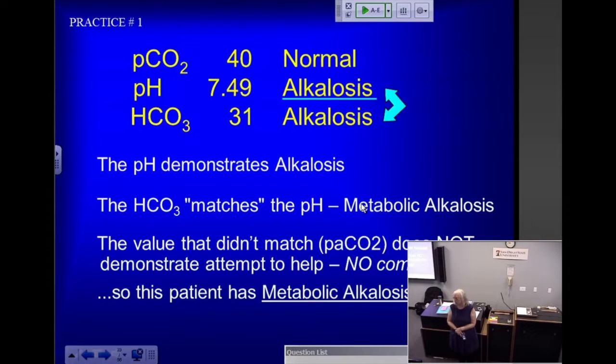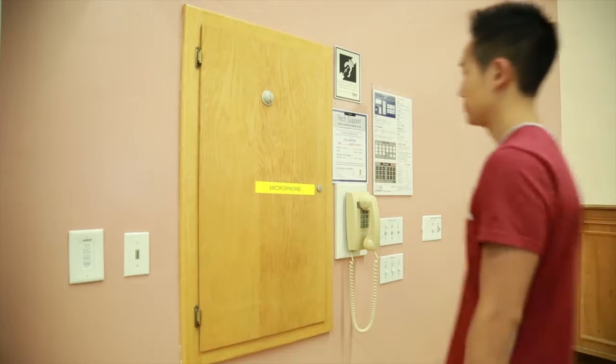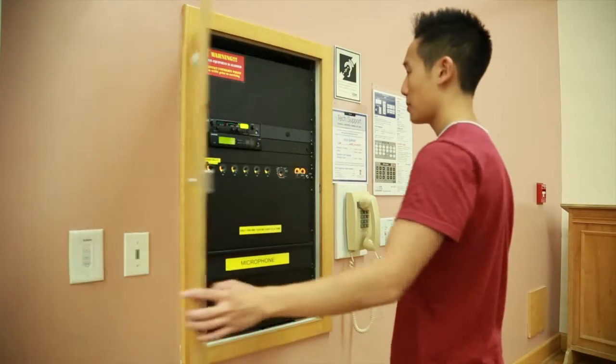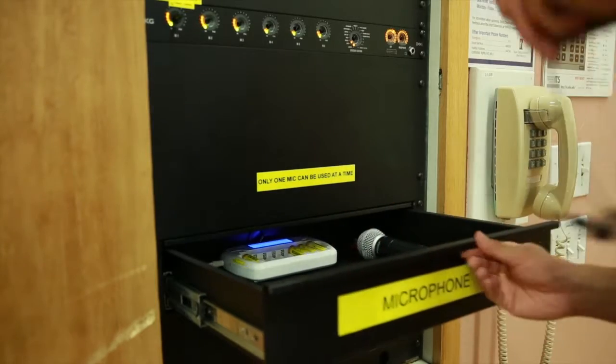This video will explain how to record a lecture with Mediasite. To get started, the wireless transmitter is located in the AV cabinet. Open the cabinet and retrieve the wireless transmitter from the microphone drawer.